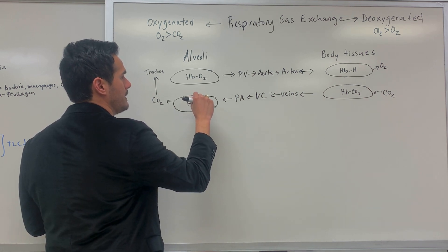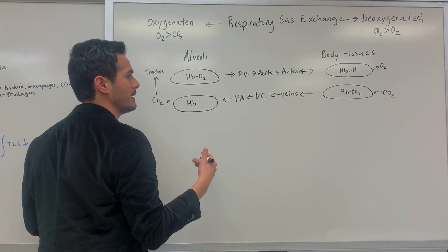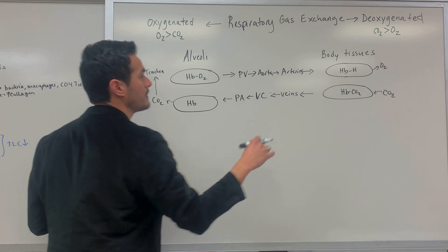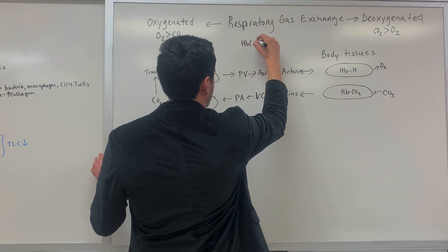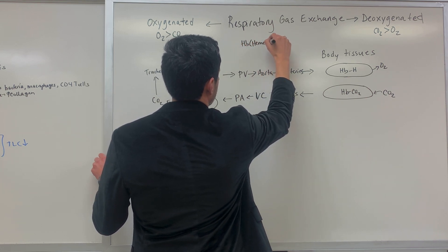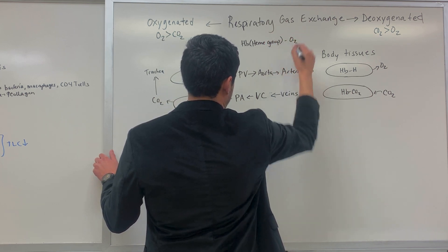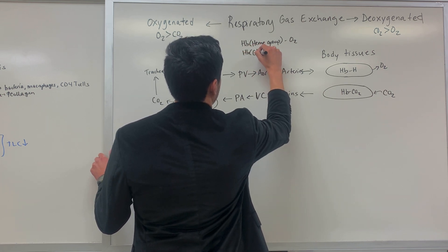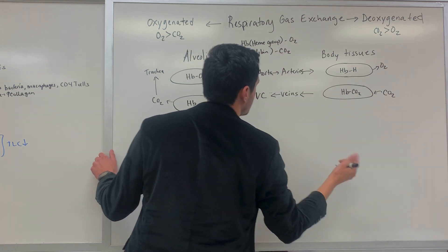Hemoglobin can bind both oxygen and carbon dioxide, but they're transported at different sites on the hemoglobin molecule. Oxygen binds to the heme group on hemoglobin, while carbon dioxide binds to the globin chains for transport.